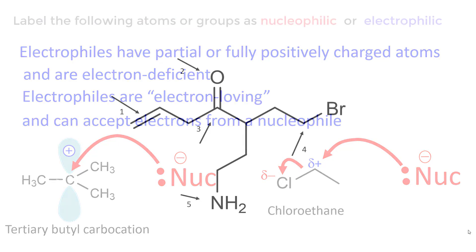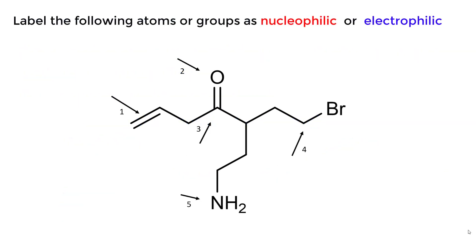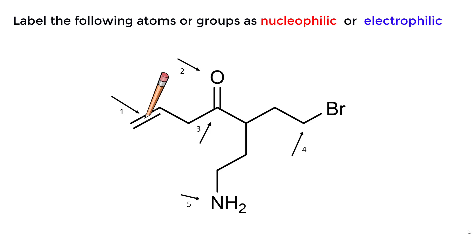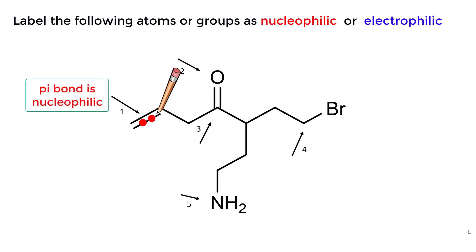Label the following atoms or groups as nucleophilic or electrophilic. The first arrow is pointing to either a sigma bond or a pi bond. The carbon-carbon sigma bond is non-polar and is very unreactive. The electrons in the pi bond are higher in energy and can be donated to an electrophile. The pi bond is therefore nucleophilic.